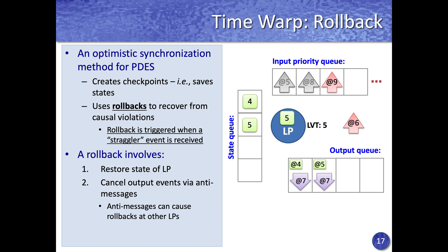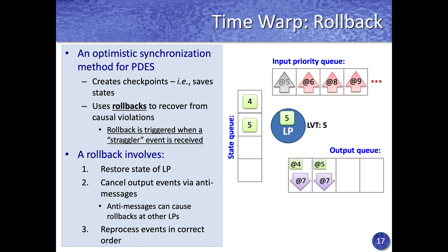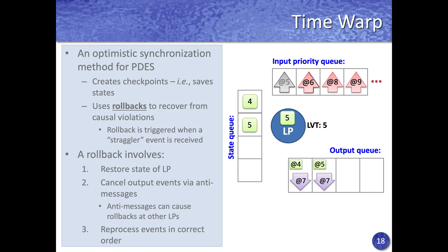Once the anti-messages are sent, events are reprocessed. The processing of event 8 is undone, events are reinserted in correct timestamp order, and processing continues. The next event at timestamp 6 is obtained from the input queue, processed, output events are generated, and the state at timestamp 6 is saved to recover from any potential future rollbacks.